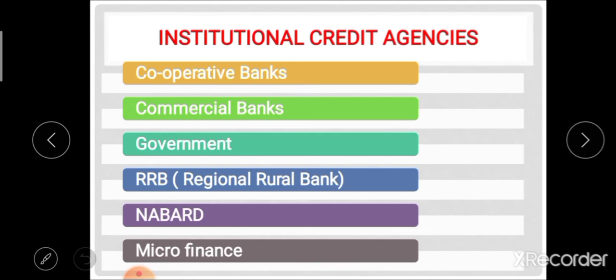The second category is institutional credit agencies or sources, which include cooperative banks, commercial banks, government, Regional Rural Banks (RRB), NABARD, and microfinance. Unlike non-institutional sources, which give credit with or without rules and regulations, institutional credit agencies have proper rules, regulations, and formalities for lending loans.